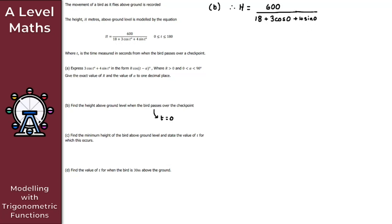Since cos0 = 1 and sin0 = 0, we get H = 600 / (18 + 3) = 600/21. This is the exact height; the decimal equivalent to three significant figures is 28.6 meters.